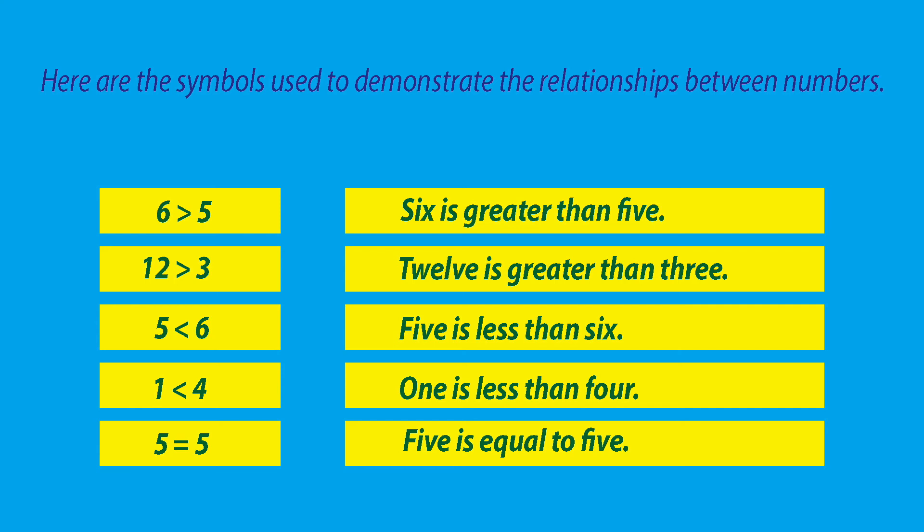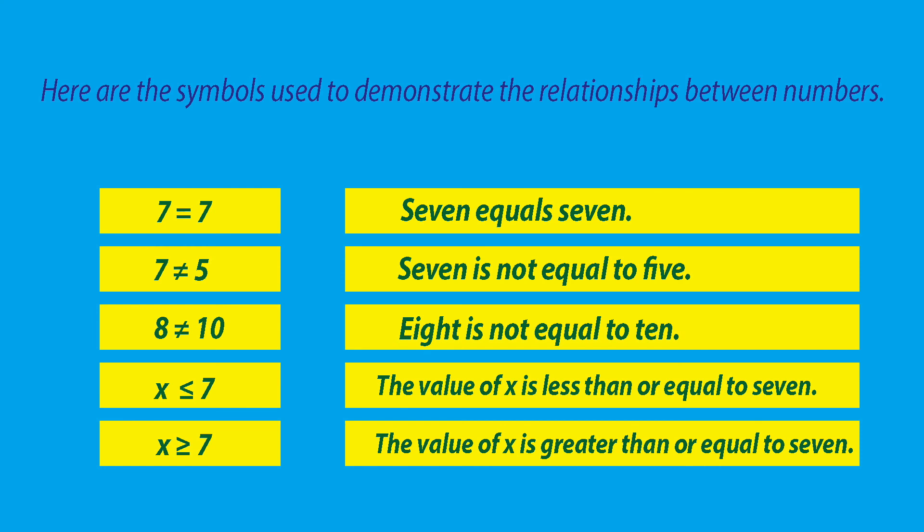Here are the symbols used to demonstrate the relationships between numbers. 6 is greater than 5. 12 is greater than 5, 12 is greater than 3. 5 is less than 6. 1 is less than 4. 5 is equal to 5. 7 equals 7. 7 is not equal to 5. 8 is not equal to 10. The value of x is less than or equal to 7. The value of x is greater than or equal to 7.